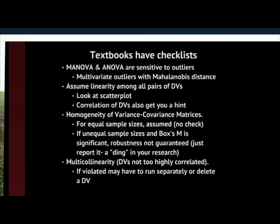If you have two DVs, you're going to be looking at linearity with a scatter plot and the correlation, to get a sense of whether the two are correlated with each other. If they're too highly correlated, we have a concern about multicollinearity. If they're too low, we're mostly concerned about outliers that might be sitting out there. We do assume some level of linearity between all pairs of DVs. So if you have three, four, or more DVs, you will need to look at each of them with each other.